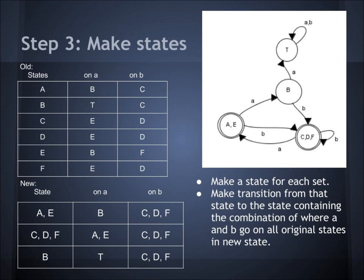Then you make the states. You make a state for each of the sets, then you make a transition from that state to the state containing the combination of where A and B go on all states in the new state. Using the old transition table, we make the new transition table. We combine A and E — on A they both go to B, and on B one goes to C and the other goes to F, so they would go to CDF. And so forth, until you get the final machine.